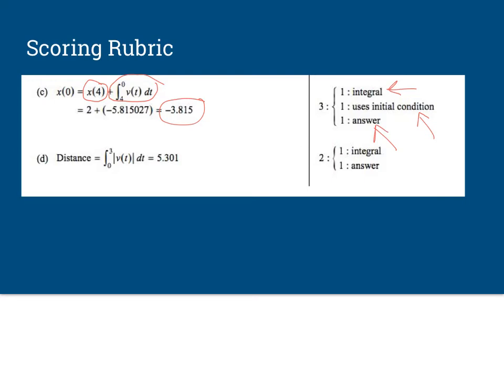Now last of all, total distance, we know that's the absolute value of the integrand evaluated from 0 to 3. So it's 5.301. Let's hope you get one of these down the AP exam.